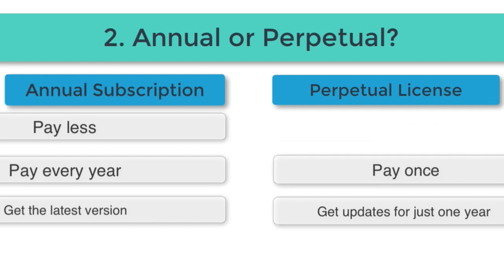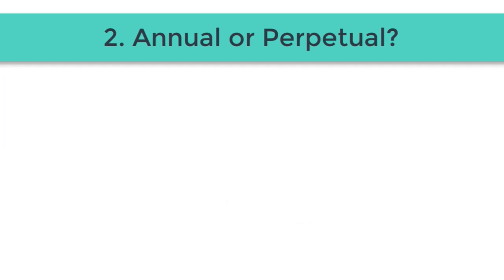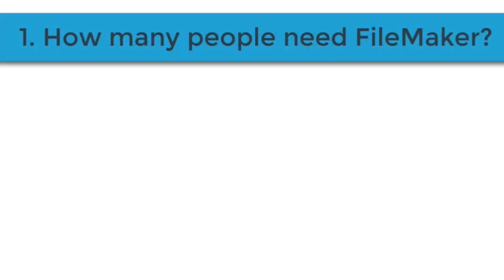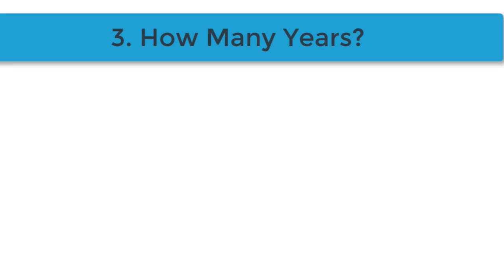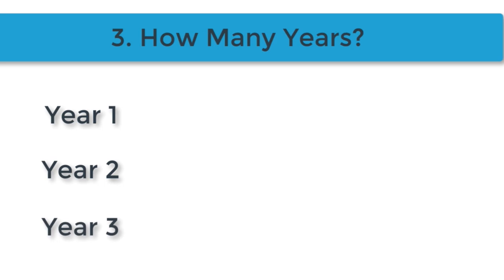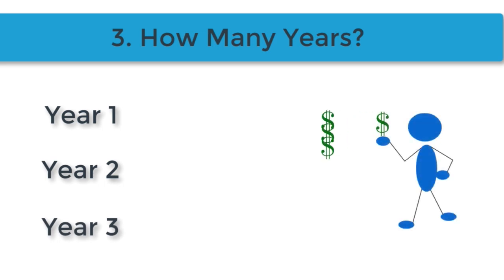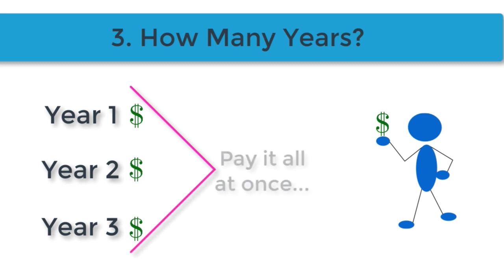Keep in mind that the perpetual license is really the full suggested retail cost of FileMaker. In plain English, a one-year perpetual will be about three times as much as a one-year annual. So the first decision is the number of people you have, the second is whether you want an annual subscription or perpetual, and the third option is whether you want a one-year, two-year, or three-year license — where you pay for it all up front and don't get a bill for two or three years, then return to annual after that.